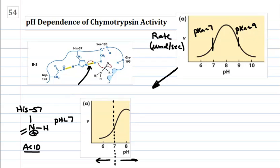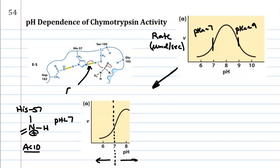It needs to be a base. In fact, I only want to draw a line to that because it's not working. That's not right. It needs to be a base form. But at pH below seven, it's in the acid form. So this does not support the mechanism. And as a result, the activity is low.